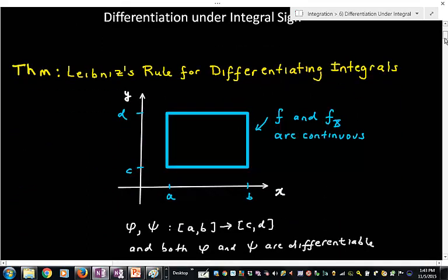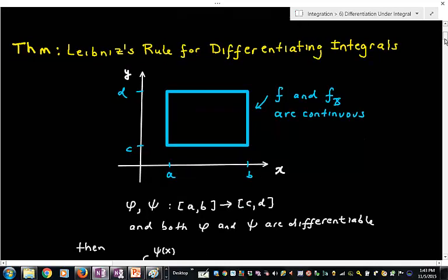This is called Leibniz's rule for differentiating integrals. And the idea is that we have an integral that's a function of two variables, x and y. Generally, we're going to be thinking about integration over some rectangular region. You can extend this, but I'm not going to do that right now.